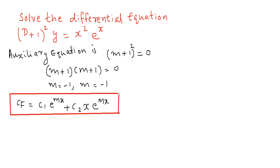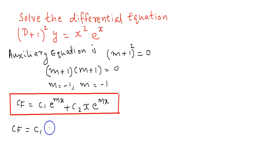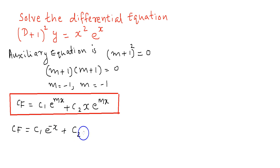Now replace m with −1. Then we get the complementary function as c₁ e raised to −x plus c₂ x e raised to −x.